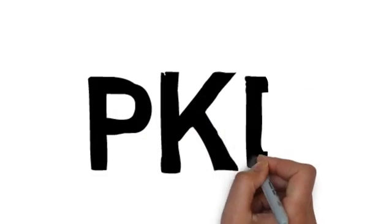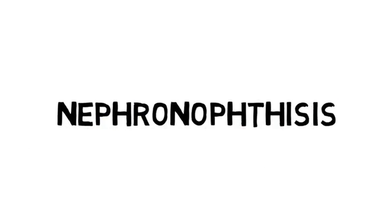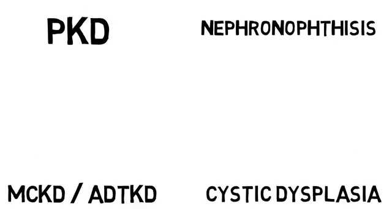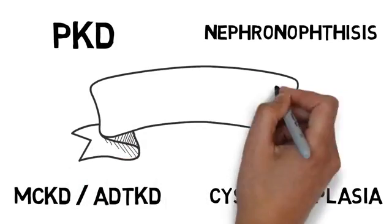This is a heterogeneous group of polycystic kidney diseases, nephronophthisis, medullary cystic kidney disease or ADTKD and cystic dysplasia, whose genetic mutations have been implicated in disrupted ciliary function, accelerating cyst formation and renal failure.